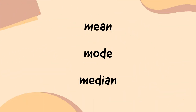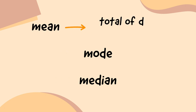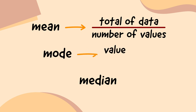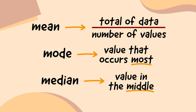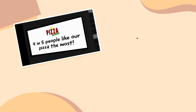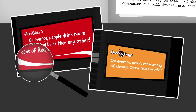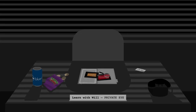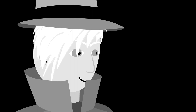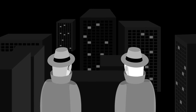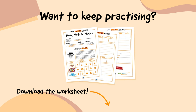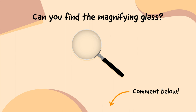Quick reminder: the mean is calculated by adding up all the data and dividing it by the number of values there are. The mode is the value that occurs the most, and the median is the value in the middle. Statistics are used every single day to tell us how we should feel about something, but sometimes we need to do some detective work to really understand the data. If you want to keep practising, download the worksheet in the video description. It's time for you to do a bit of detective work of your own — this magnifying glass is hiding somewhere in the video. Can you find it?